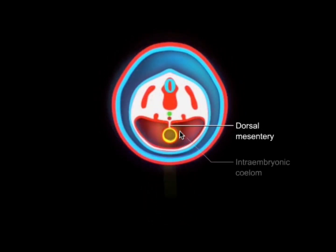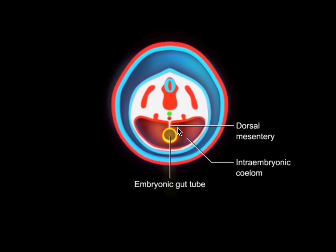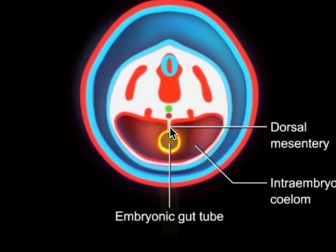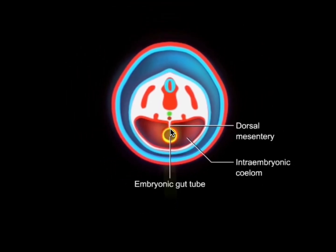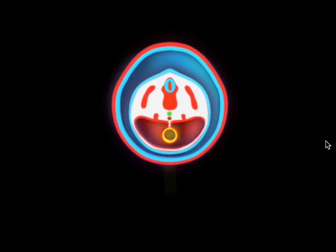What's left thereafter would be the umbilical cord. From here we can see that the midgut is suspended by a dorsal mesentery from the body wall, and this is a story that will continue later on in the video.